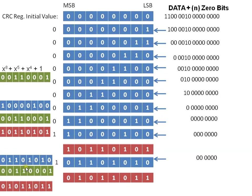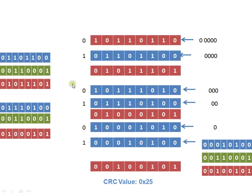After shifting all the bits, the final CRC register has a value of 0x25, which matches the value obtained using the division operation. The receiver will again perform the same operation, compare the calculated CRC value with the received CRC value, and if both values match, it considers the transmission error-free.